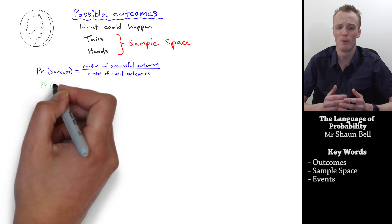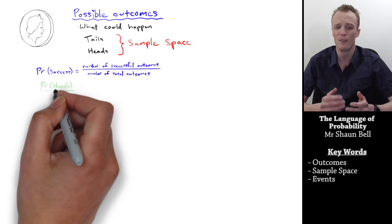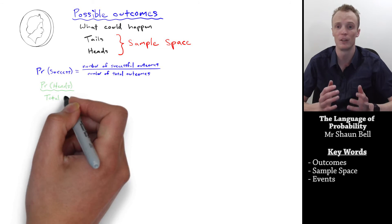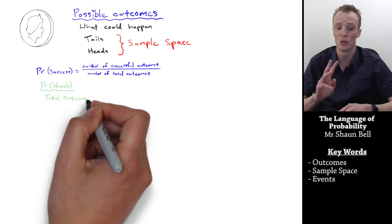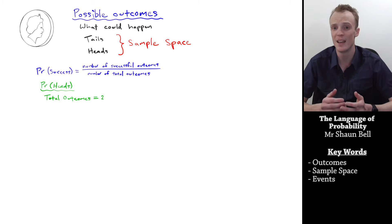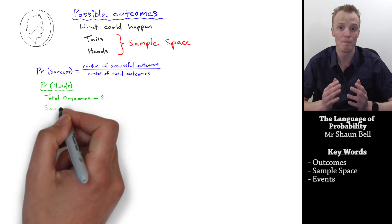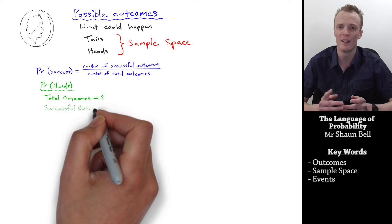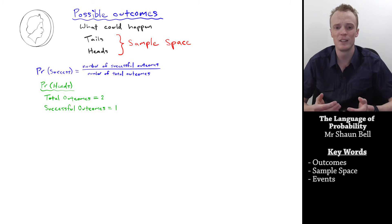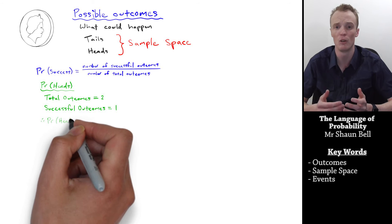So if I want to determine the probability that when I flip that coin it lands head side up, I must first determine the total possible outcomes that could occur. There are two possible outcomes. Then I determine how many of the possible outcomes meet our criteria of success — in this case, only one outcome meets our criteria: that being a heads. So we say there is one successful outcome. Therefore, we can describe the probability of the coin landing head side up to be equal to 1 over 2, or a 1 in 2 chance.